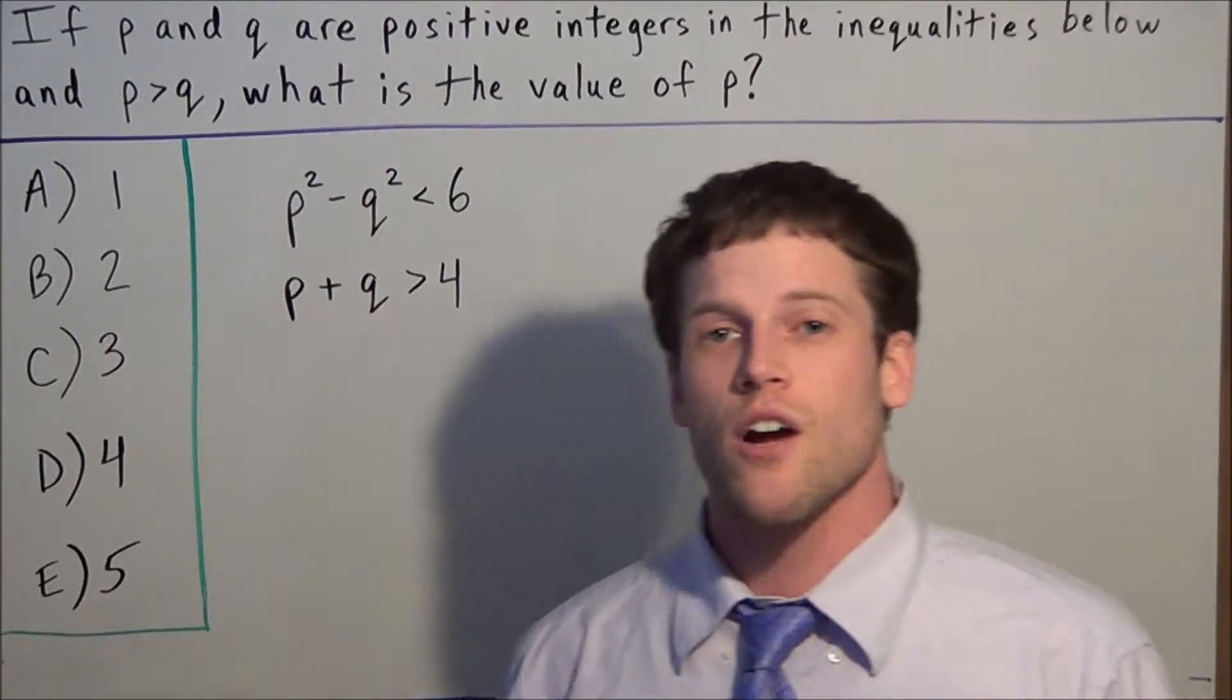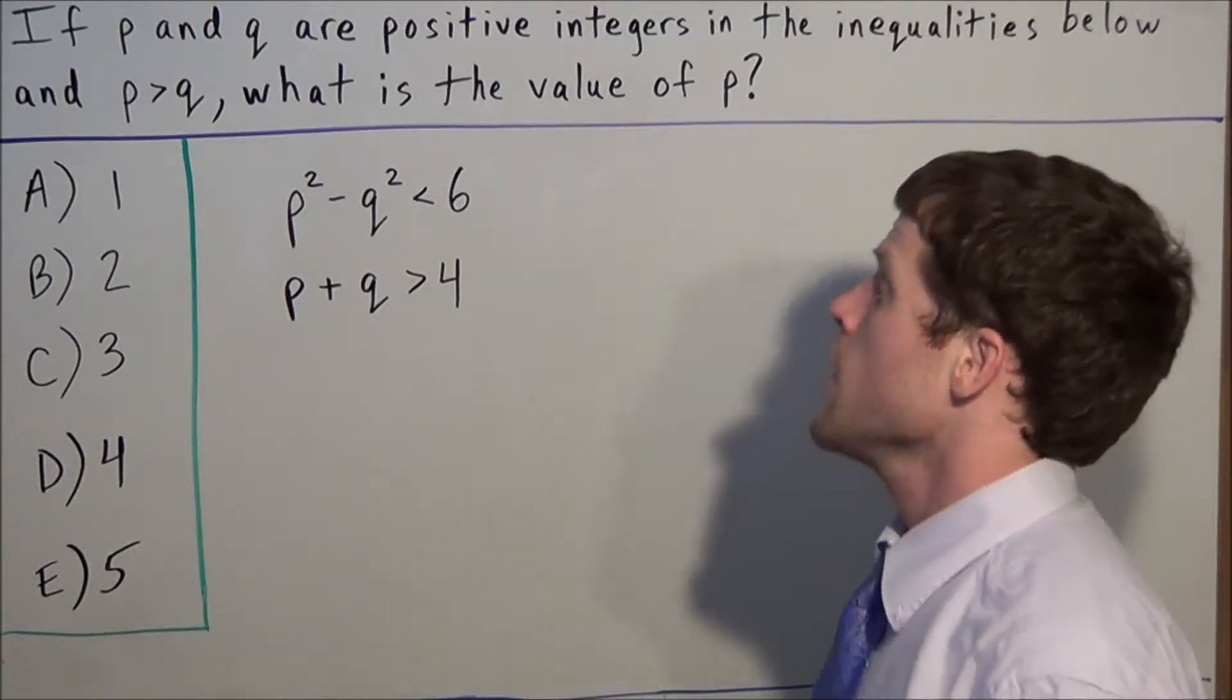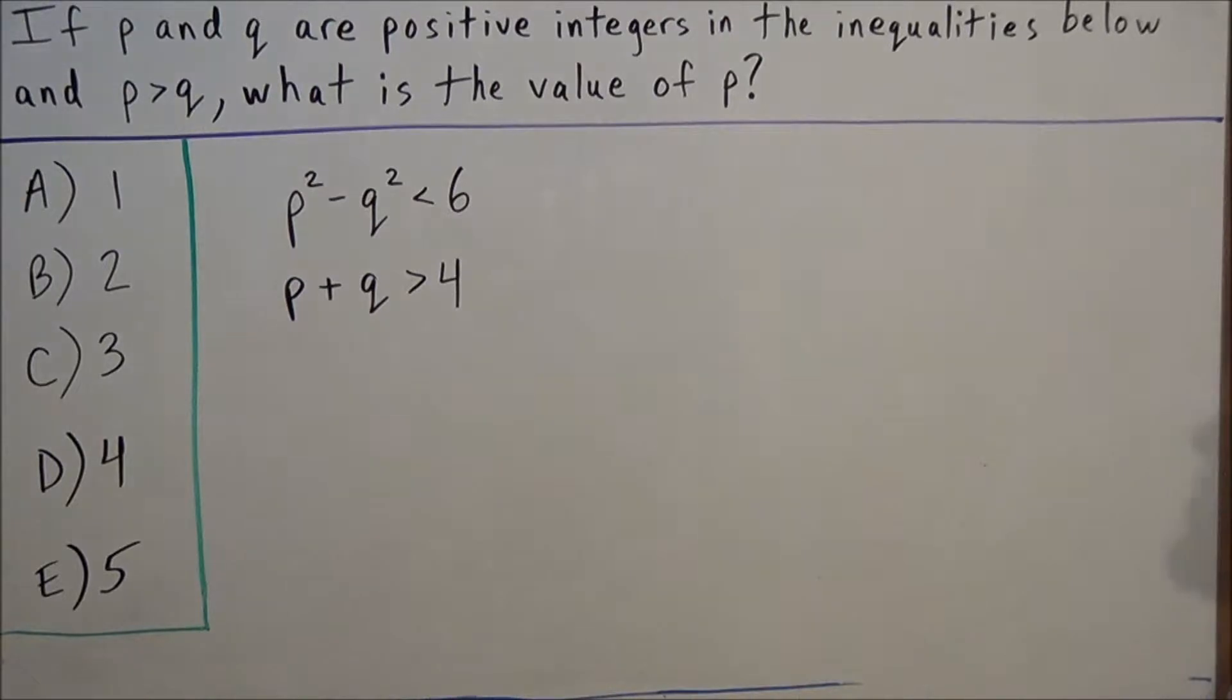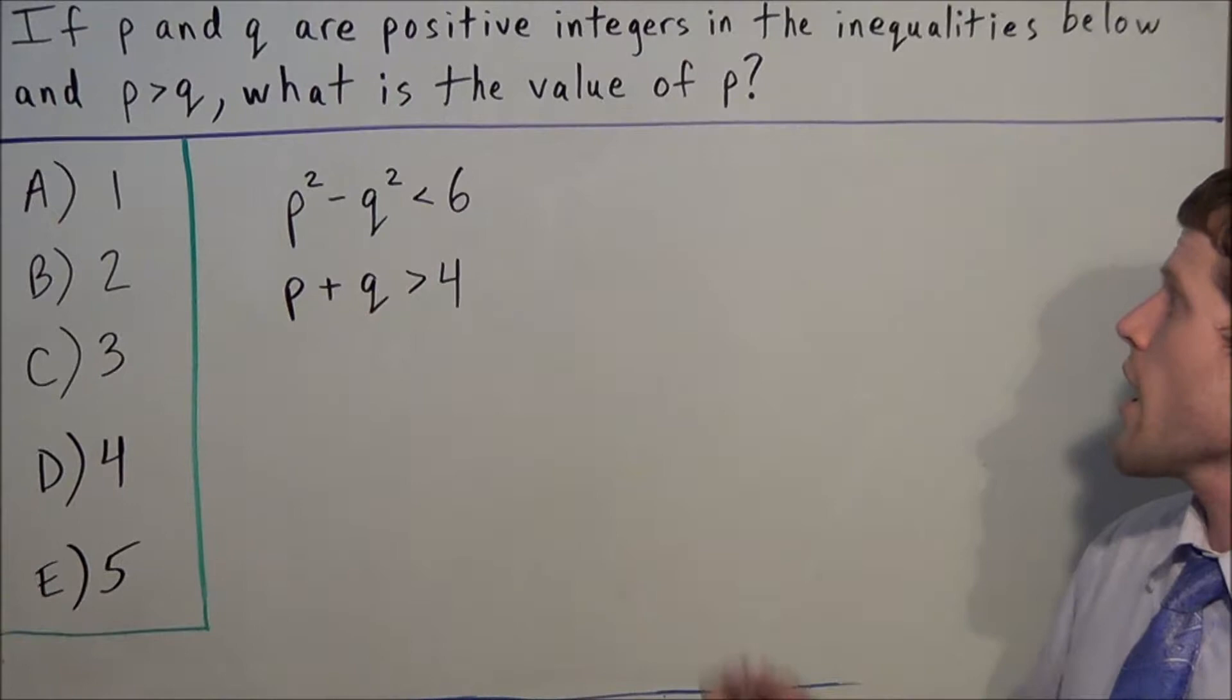Hi, my name is Mr. D, and today I want to take a look at a system of inequality SAT problem. If p and q are positive integers in the inequalities below and p is greater than q, what is the value of p?